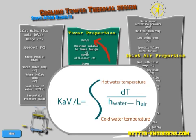KAV over L is the solution to the Merkel equation shown on the screen. This result, as you may already know, is the total area under the curve shown.